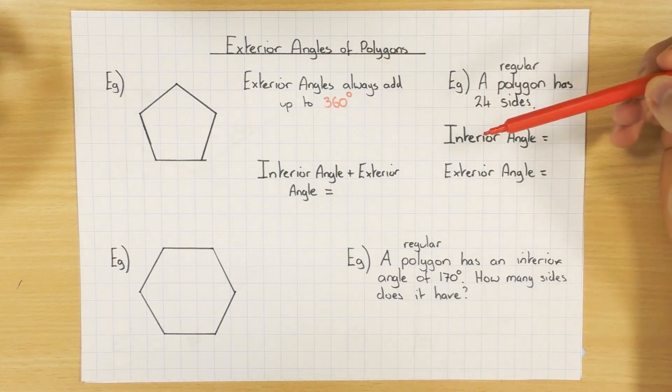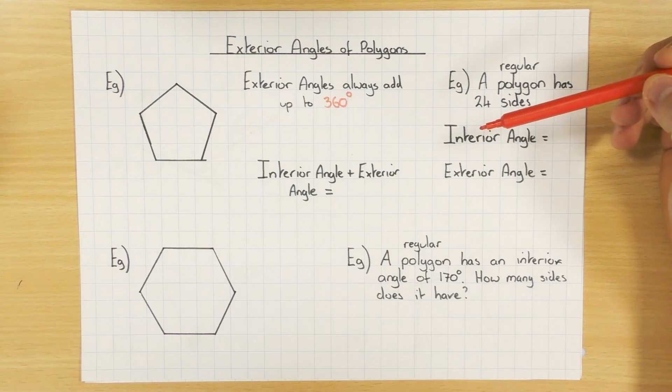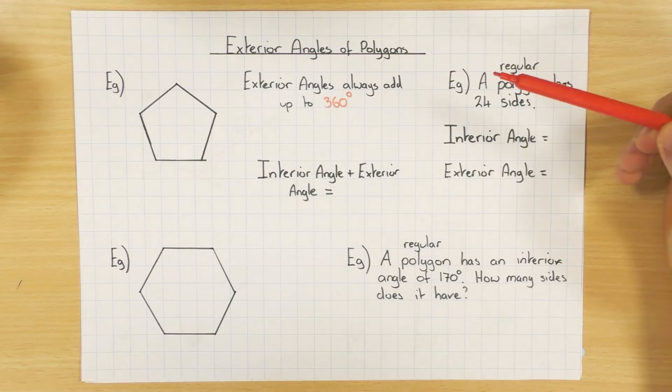Let's start off with keywords here. Polygons just means a many-sided shape. It could be a three-sided shape, four-sided, five, six, seven, eight-sided shape, ten-sided shape. It just means a many-sided shape.